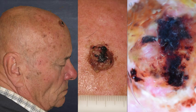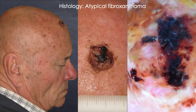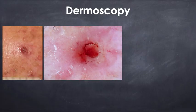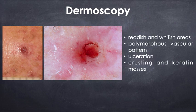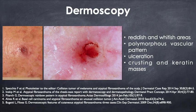This is one example of atypical fibroxanthoma, AFX, on the frontal area of an eighty-year-old man with an encrusted nodule. In dermoscopy, there have been some reports highlighting the presence of reddish areas, polymorphous vascular pattern, ulceration, crusting, and keratin masses.